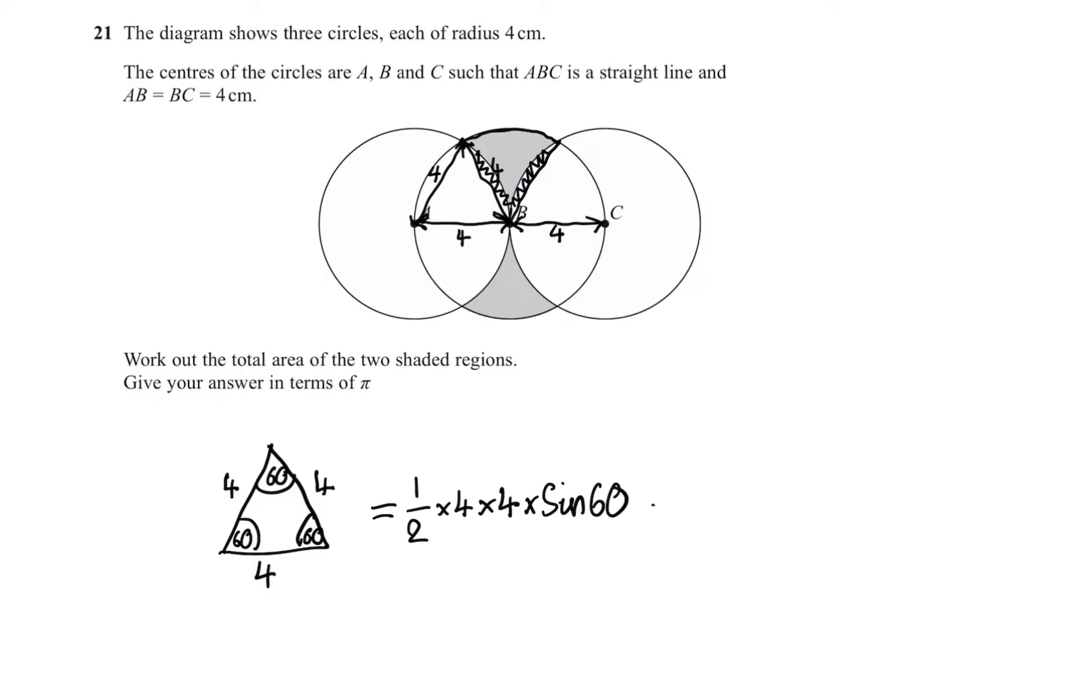Now, we can simplify this. This is a half times 16 times root three over two. So we're going to get four root three in total. So we can just get rid of all this. And we have the area of this triangle as four root three.